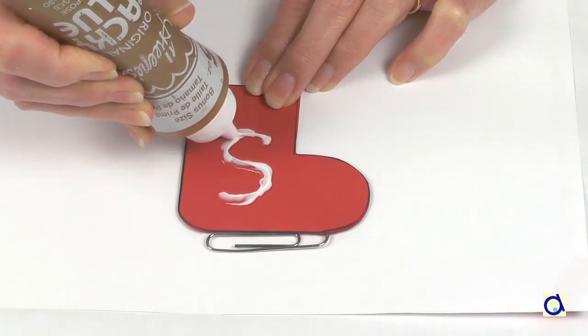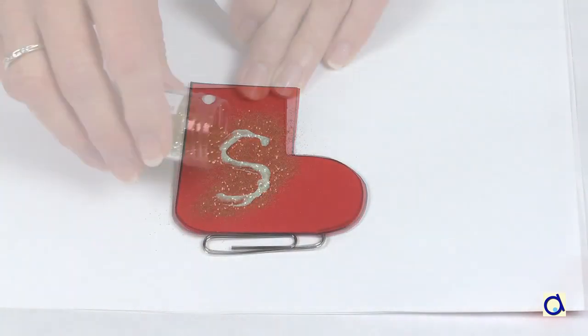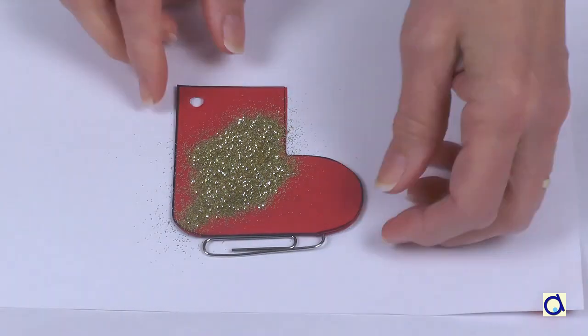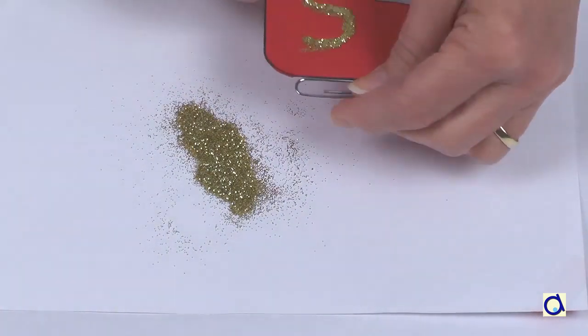Then follow the pencil line with white glue. Pour glitter on the letter drawn in glue. Remove excess glitter.